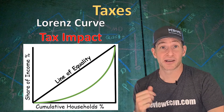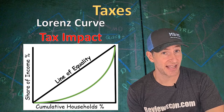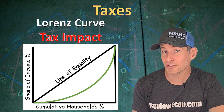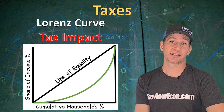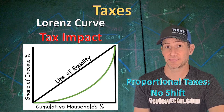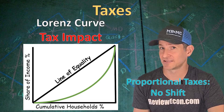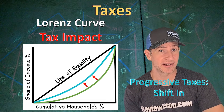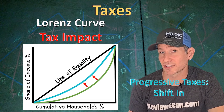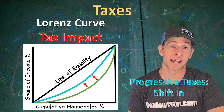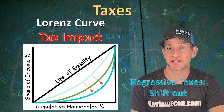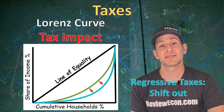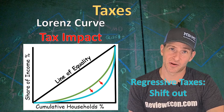Let's look at the impact of different types of taxes on income distribution through the Lorenz curve. Proportional taxes leave the income distribution the same, so the Lorenz curve does not shift. Progressive taxes decrease income inequality and shift the Lorenz curve toward the line of equality. Regressive taxes, on the other hand, increase income inequality and shift the Lorenz curve outward.